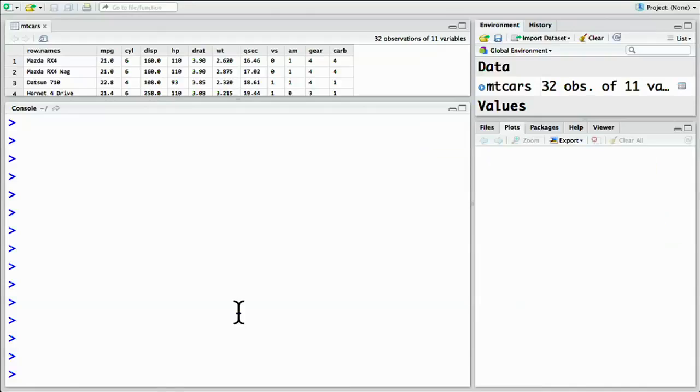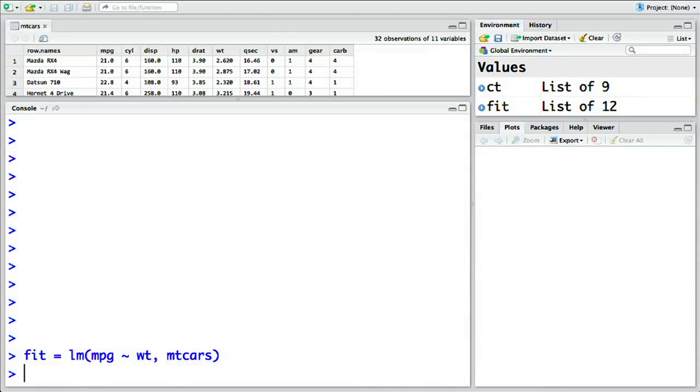Let's save this linear model to a variable by doing fit equals lm for linear model. Now I put the formula we're testing, which is miles per gallon explained by weight. Remember that tilde means explained by, and the data we're working with, mtcars. This saves the fit. Now we can look at the details of it with the summary function. Summary of fit.